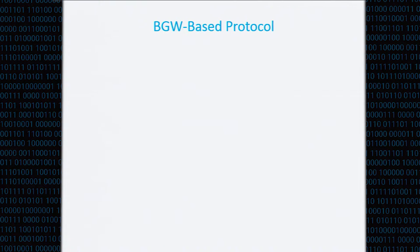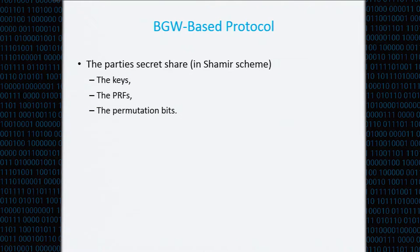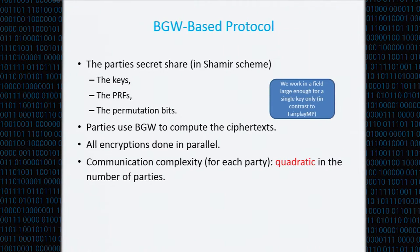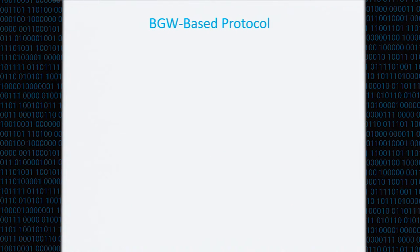Now I'll briefly go over the BGW-based protocol. The parties secret share in a Shamir secret sharing scheme the keys, the PRFs, and the permutation bits, and then use BGW to compute the ciphertext. All encryptions are done in parallel, and the communication complexity for each party is quadratic in the number of parties. In contrast to FairplayMP, we worked in a relatively small field, which is a significant saving. However, even to share the permutation bits — which are just bits — you do have to send a field element, so there is a loss of efficiency. Also, in this scheme we do have to share the PRFs; otherwise reconstruction can only be done at the online phase, which is supposed to be very fast.